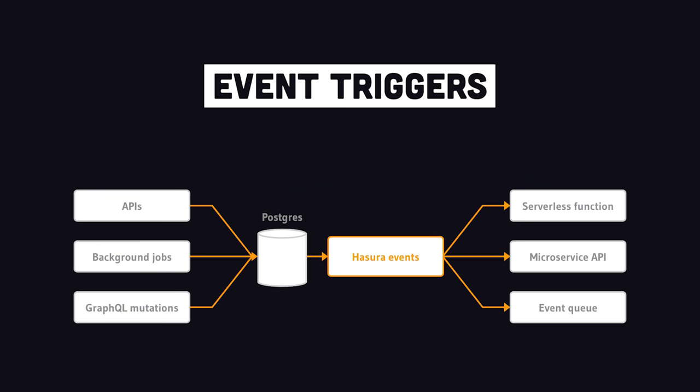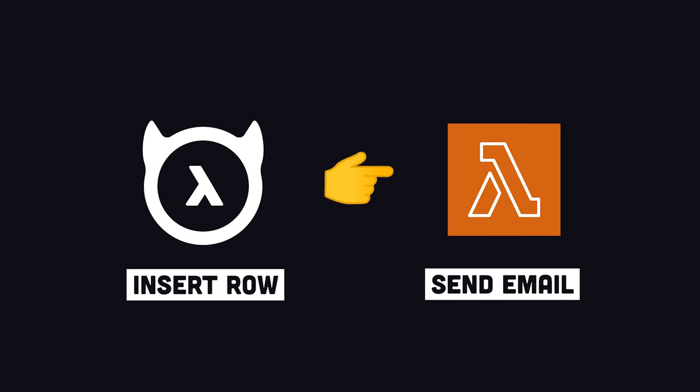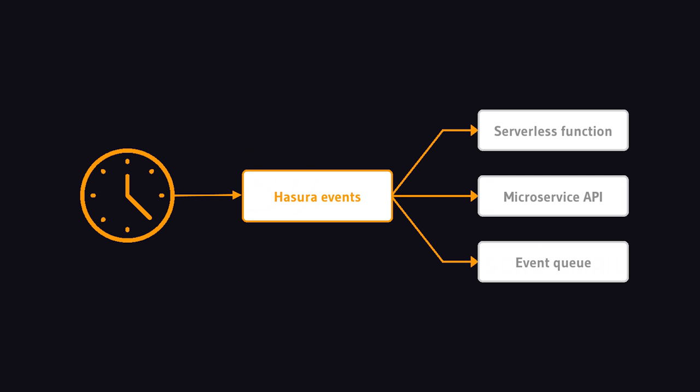In addition, you may want to trigger server-side code when something changes in the database. Like you may want to send a transactional email when a new row is added to a certain table. Hasura events can be triggered based on operations to a certain table or scheduled with a cron job in the background.